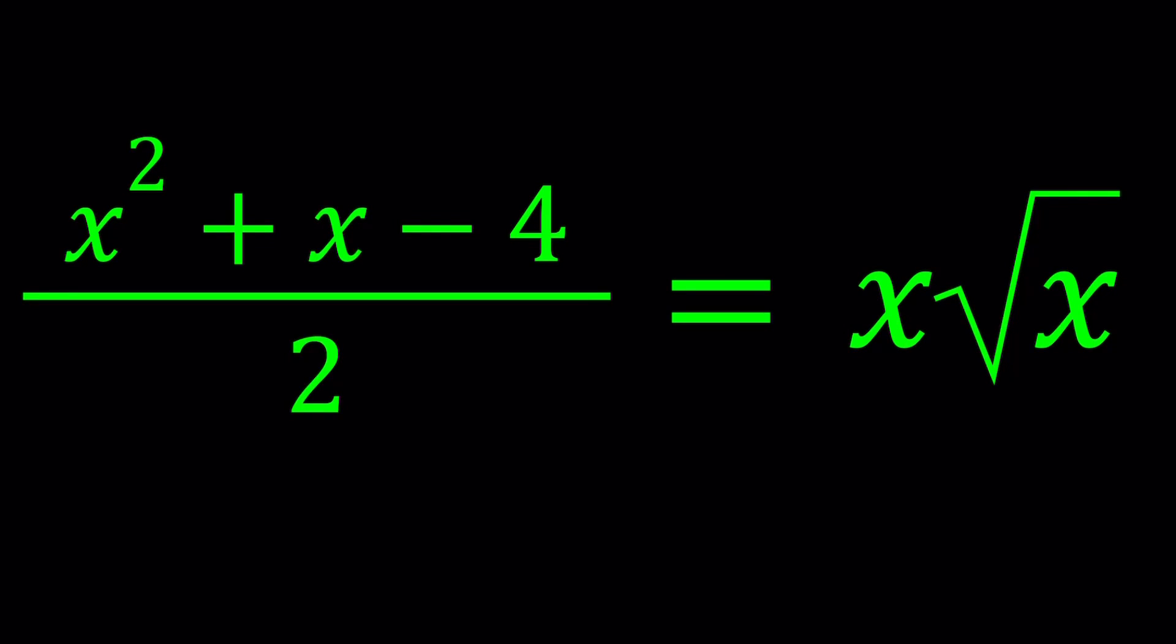Hello everyone. In this video, we're going to be solving a radical equation. We have x squared plus x minus 4 all over 2 equals x times the square root of x. And we're going to be solving for x values. I'll be presenting more than one solution. Alright, let's start with the first one.